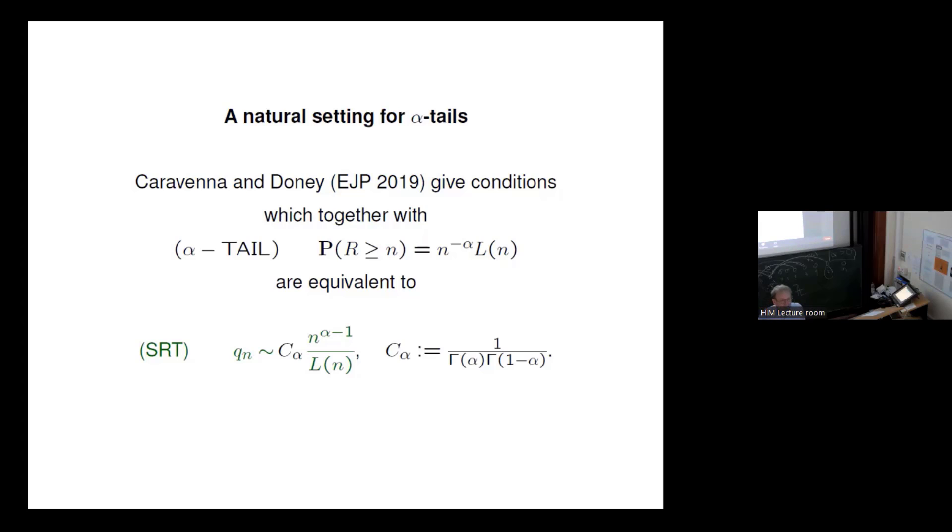And there was a... Actually, this has a long history. Matthias Birkner, decades ago, when he wrote his Diplomarbeit in Frankfurt, he already dealt with this case. And at that time, Dhoni's paper was not even written, where he clarified a condition on the slowly varying function, which made things nice. And only recently, Karawena and Dhoni, Dhoni is now past 80, there is a beautiful volume on his work, which I saw in Oberwolfach a few weeks ago.